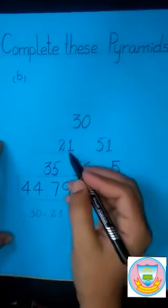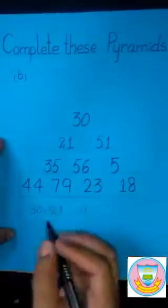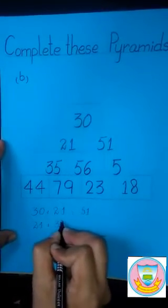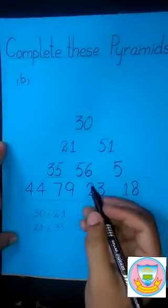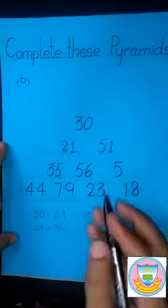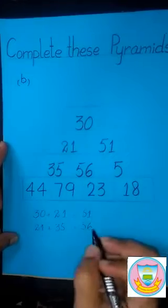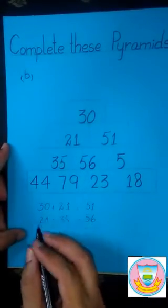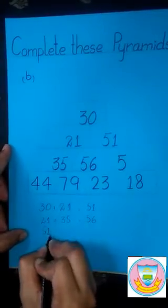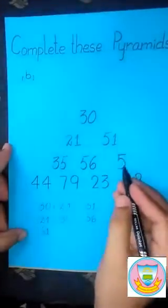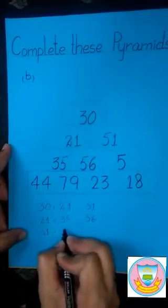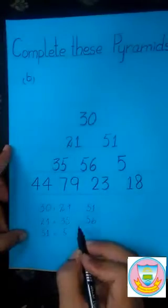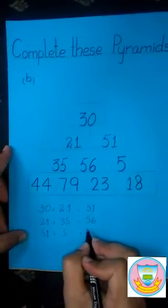Our second equation: we add 21 with 35. 21 plus 35, we get the answer of 56. Our third equation: we add 51 plus 5, and we get the answer of 56.